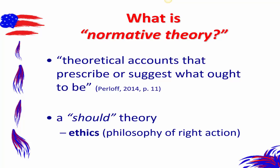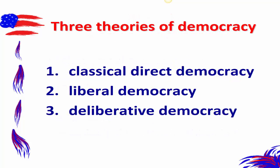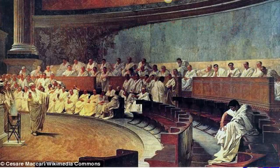Perloff outlines three important normative theories that inform the way we understand our small-d democratic form of government and politics today: classical direct democracy, liberal democracy, and deliberative democracy. The first, classical direct democracy, is literally millennia old — we need to go back all the way to ancient Greece.